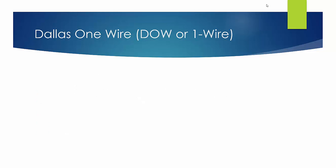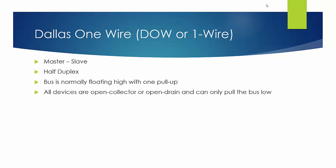So what are the basics of the Dallas OneWire? It's also called DOW or OneWire. Well, first of all, it's a master slave, just like we saw in I2C or the SPI. It's half duplex, as you can imagine, if there's only one wire. Like the SPI and I2C, the bus is normally floating high, and somewhere on that bus is a pull-up resistor. And all devices connected to that bus are open collector or open drain, and they can only pull the bus low.